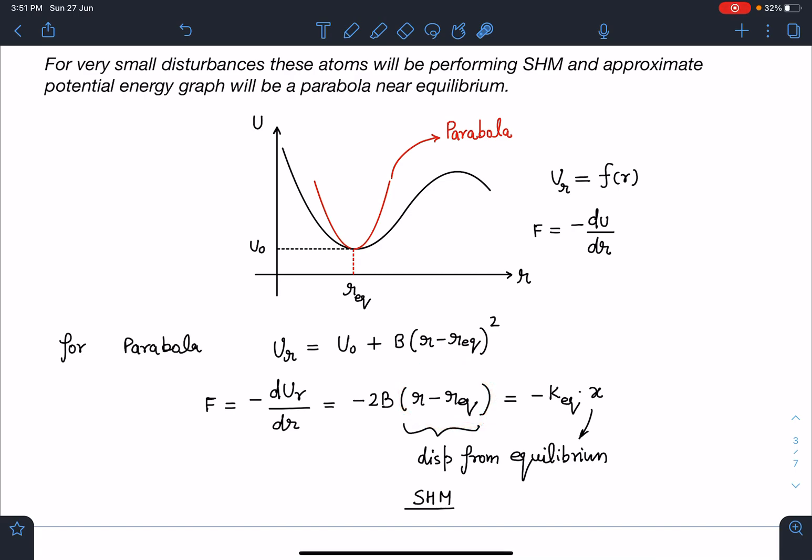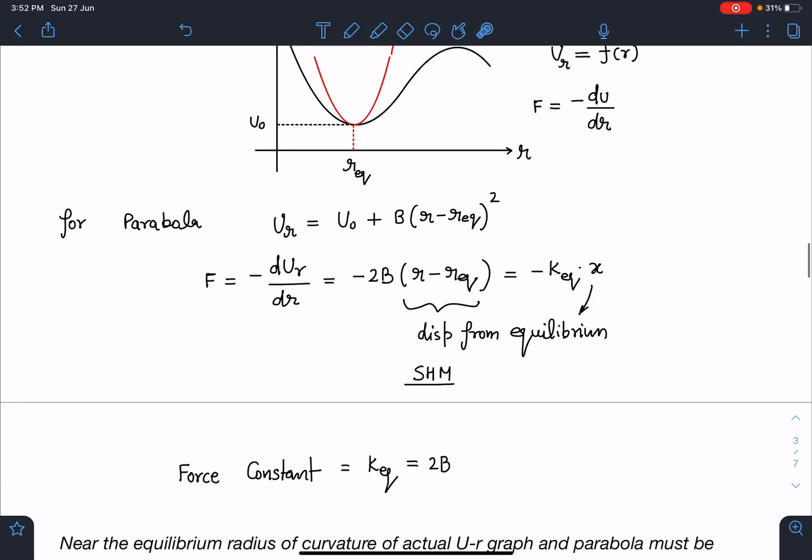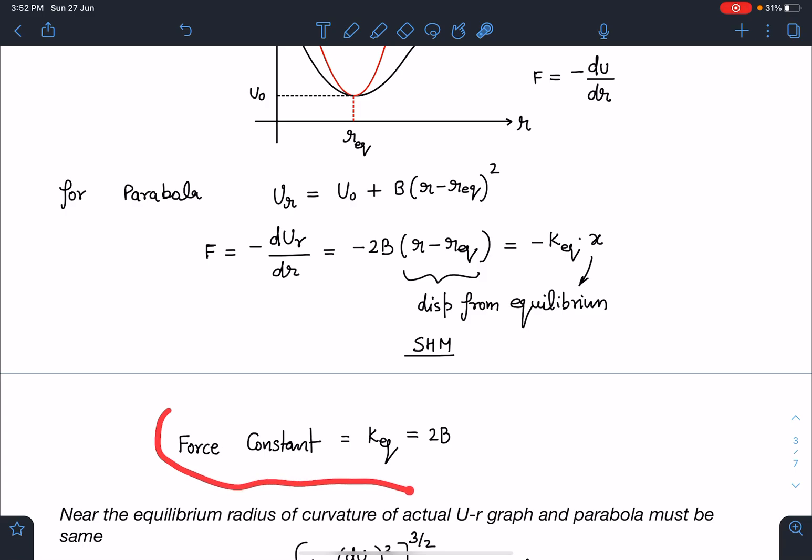Once we displace it slightly, this distance is going to be r - r_eq, which is the displacement from mean position. You can see here we are going to get this somewhat similar to SHM equation, so I can write it as -kx. So k_eq I can calculate as 2B. Force constant for such springs having a given potential function, we can write it as 2B.